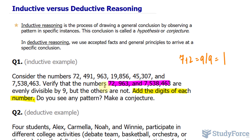Let's try the same thing for 963. If I add up 9 plus 6 plus 3, I get 18. 18 is divisible by 9; the output is 2. And it turns out that if I take this number and divide it by 9 using a calculator, I get an integer output, which means that it is divisible by 9.